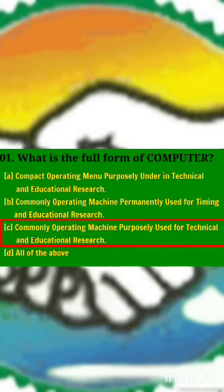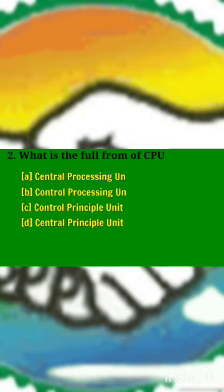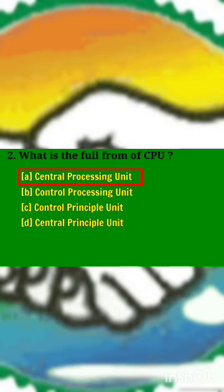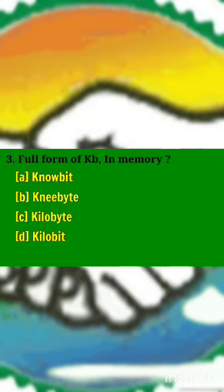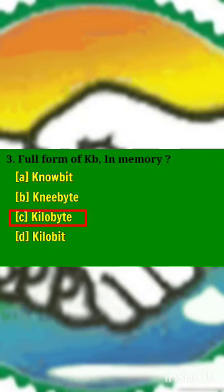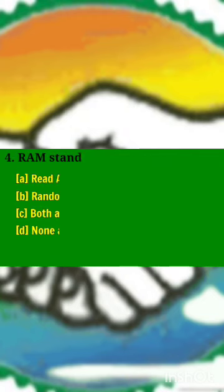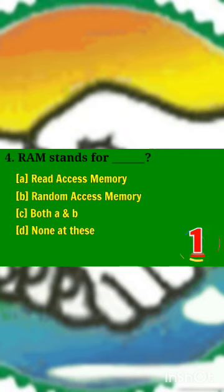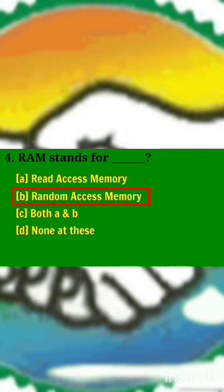Commonly operating machine purposely used for technical and educational research — what is the full form of CPU? Answer A: central processing unit. Full form of KB in memory? Answer C: kilobyte. RAM stands for? Answer B: random access memory.